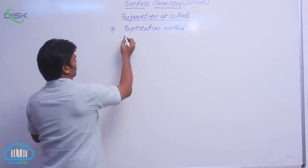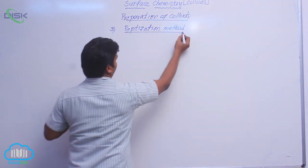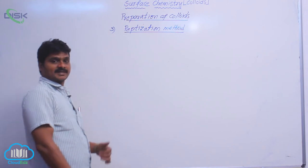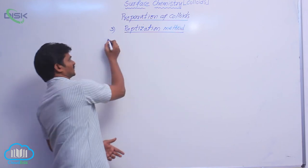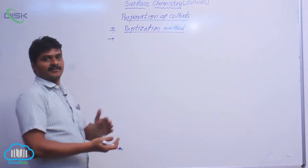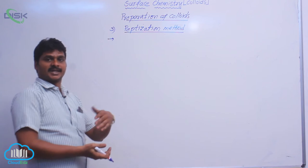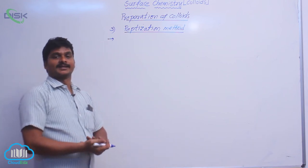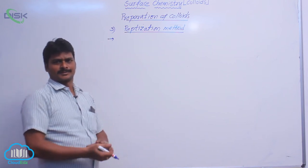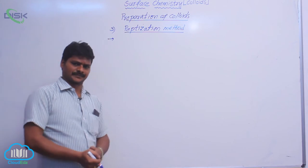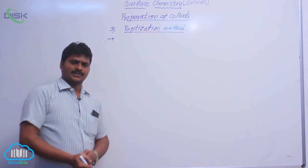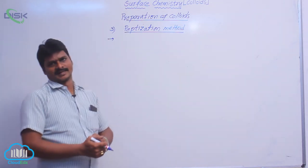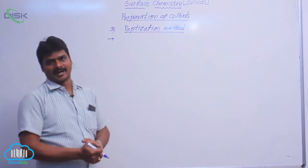Now, the peptidization method — what is this? Peptidization is a process which converts a precipitate into particles in the colloidal range. A precipitate means it is a suspension, and suspension has a relatively larger particle size than colloidal particles.